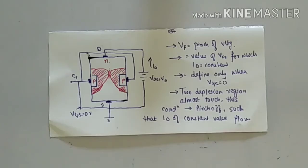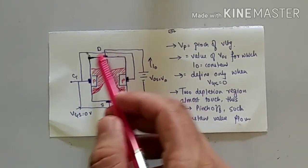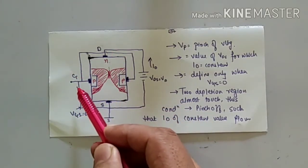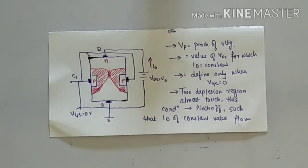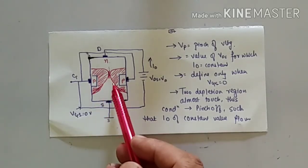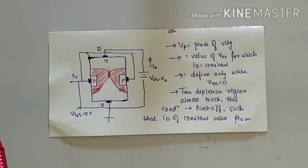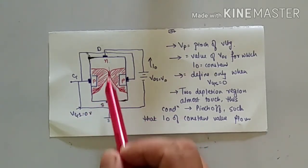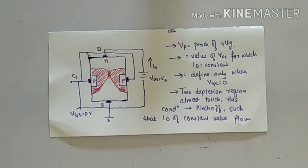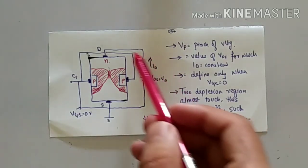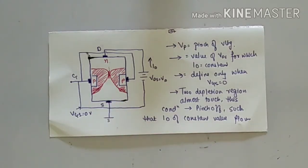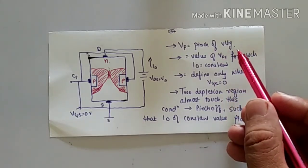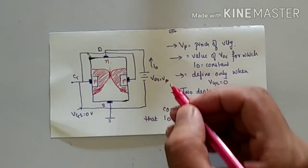We are saying that the value of VDS for which ID equals constant — and when is this possible? When VGS is equal to zero. This is the condition of reverse bias: P-type is connected to lower potential and N-type is at higher potential, so reverse bias condition occurs. You can see the two depletion regions almost touch — they are not touching, but almost touching. This is the condition of pinch-off, such that ID of constant value flows from this region. So this is the concept of pinch-off voltage, and it is known as VP, i.e., VDS equal to VP.